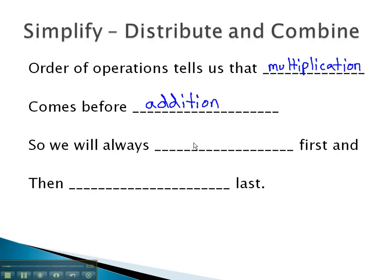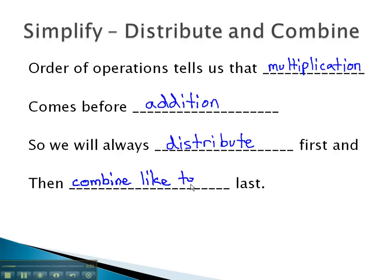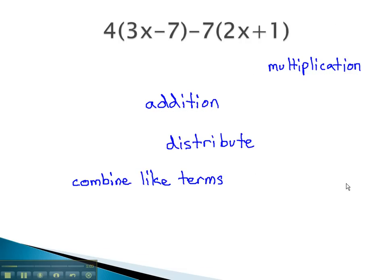We will always distribute first, which is our multiplication step, and then combine like terms last. Let's take a look at some examples where we do just that — distribute and combine like terms.